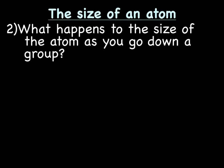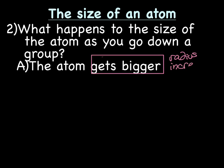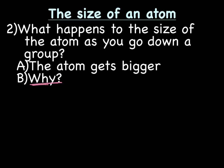Big question: what happens to the size of an atom as you go down a group? Think it through before I give you the answer. As you go down a group, the atom gets bigger — or, if you prefer, the radius increases. Of course I'm going to ask you: why does the atom get bigger going down a group?